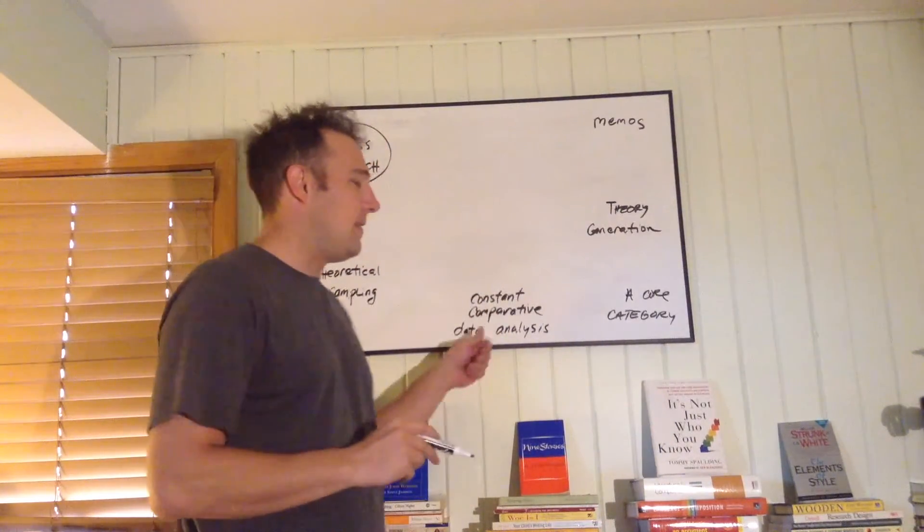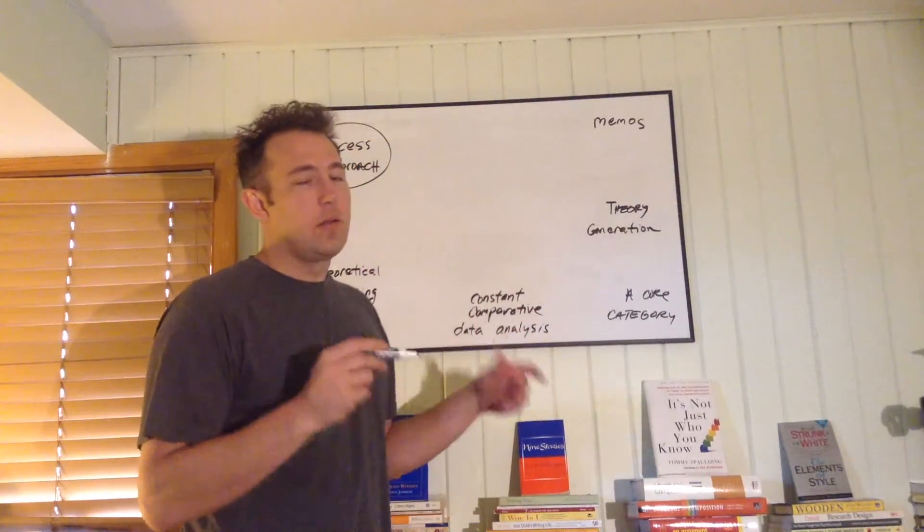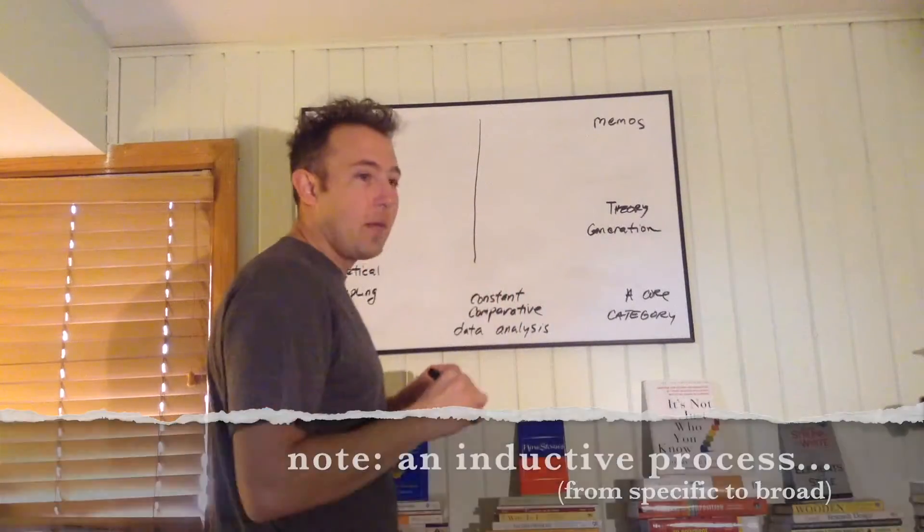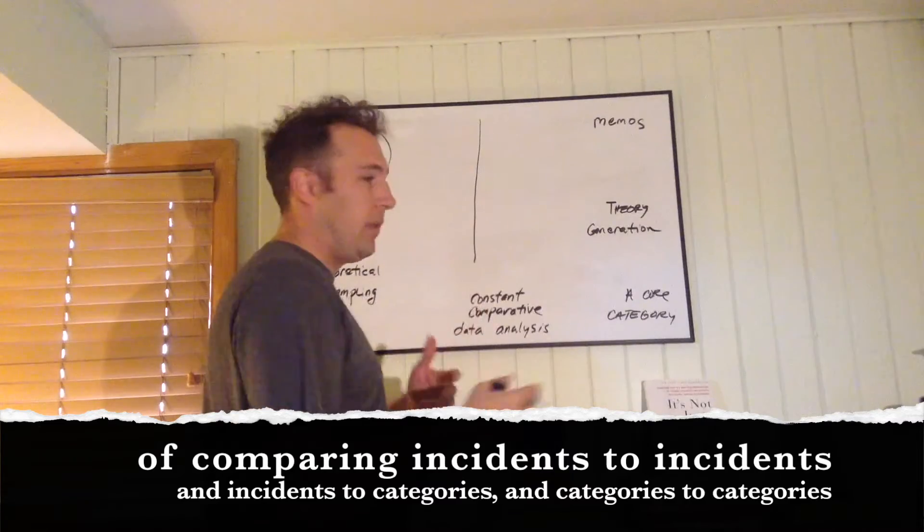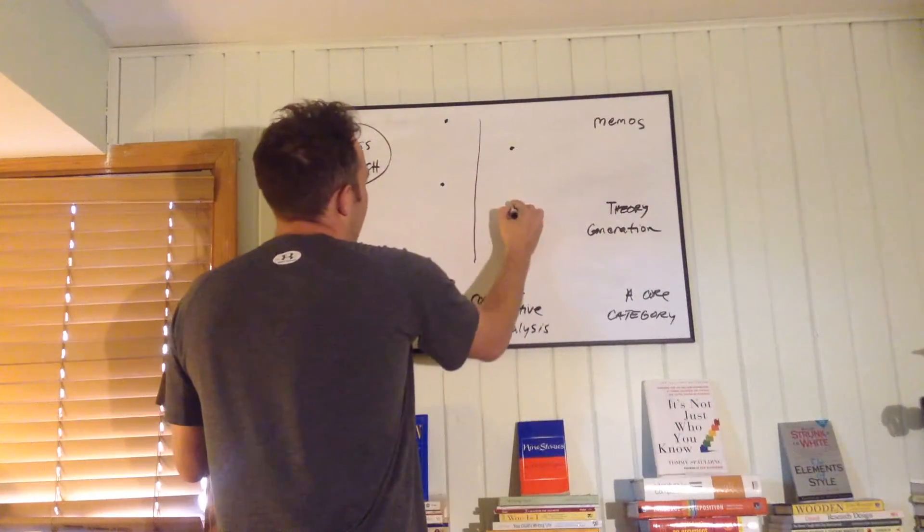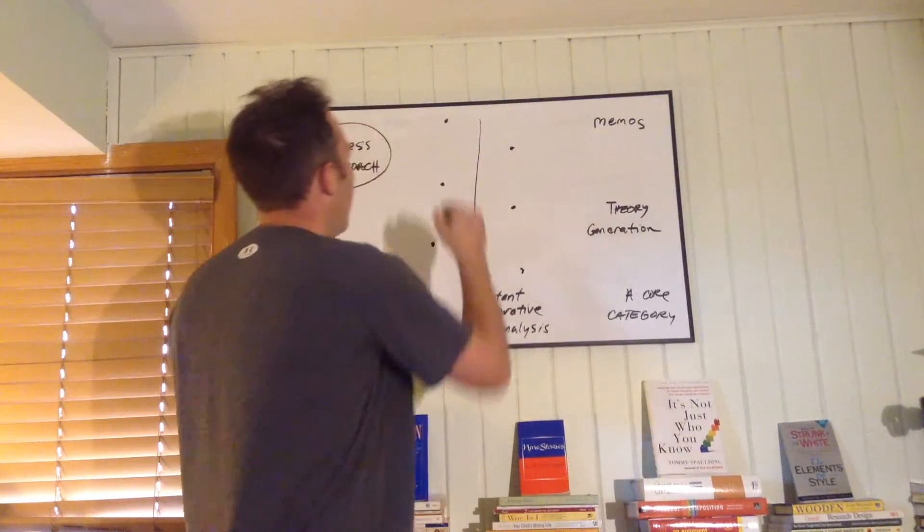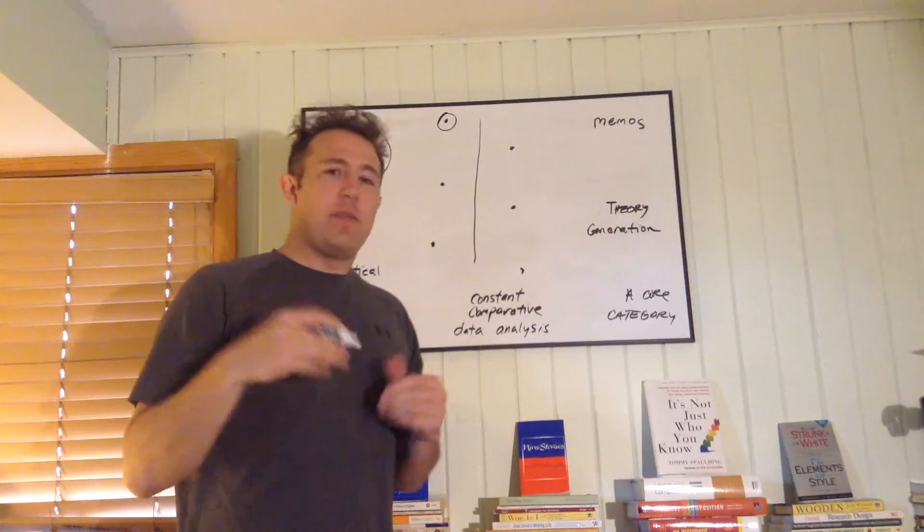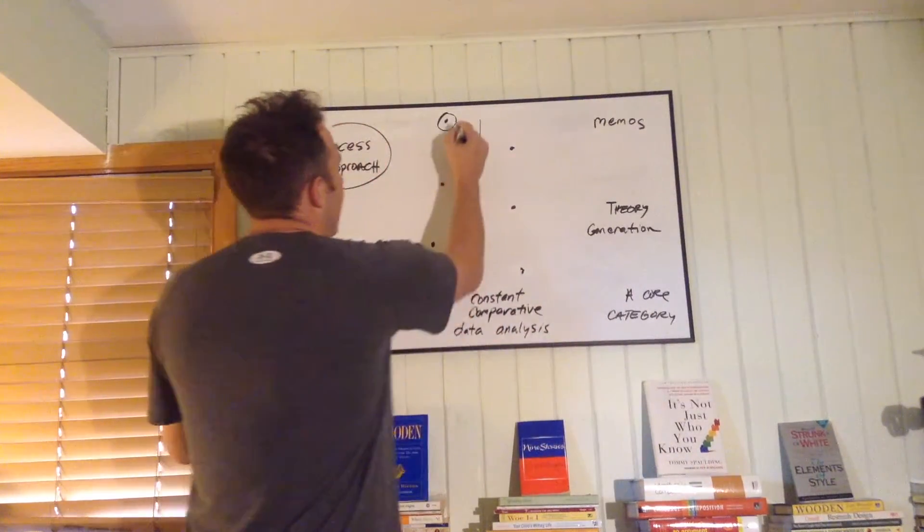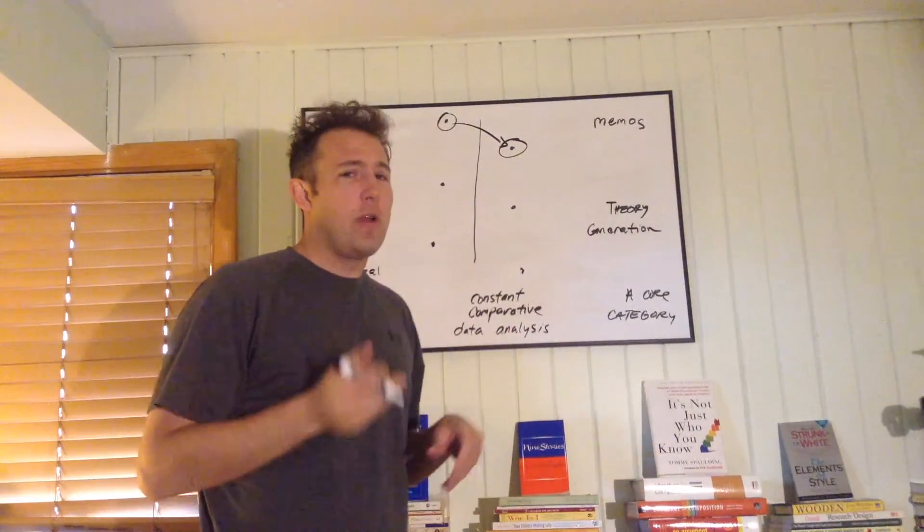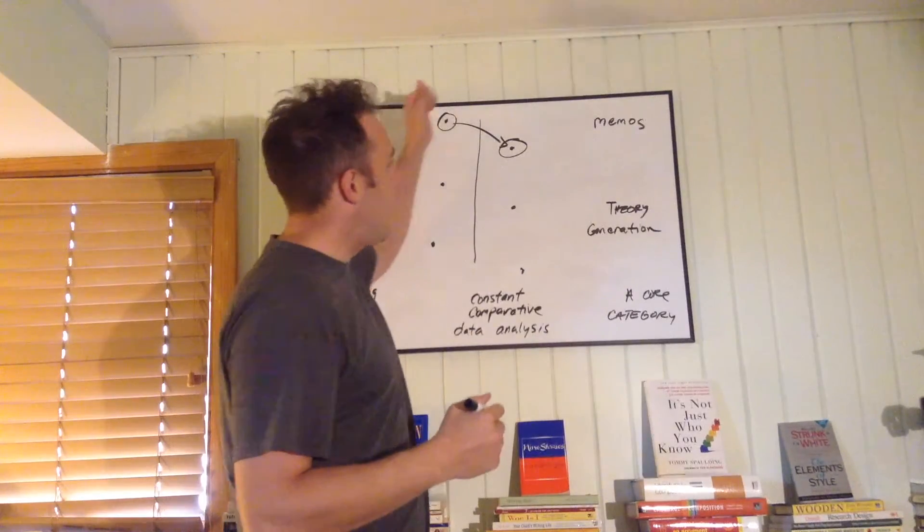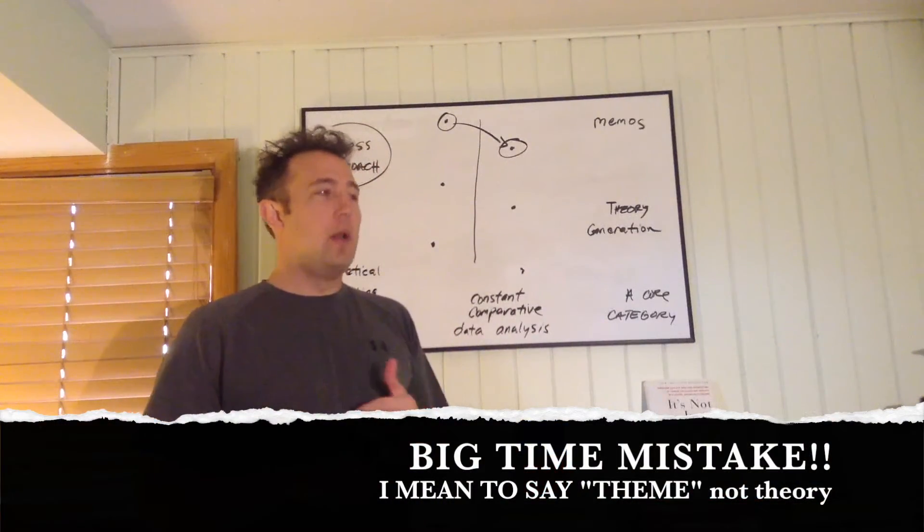So constant comparative data analysis, and this is why quantitative researchers respect grounded theory research, because of the rigor and extent of this process. I like to view it as a ping-pong match between data and creating a theme. So if I had to draw a diagram, it would be something like this, where here is our data. I've interviewed each of you, and I have it all written out, I have my memos, I have things like that, and then I'm going to develop an initial theme or category. The words theme and category are used more or less to mean the same thing. And so I take the data, and I develop a theory. From there, I go okay, here's my theory, or maybe I have a couple of theories.